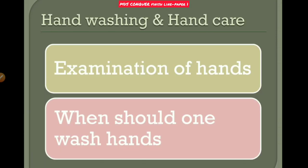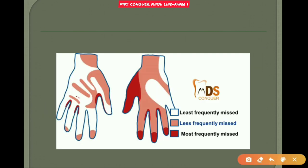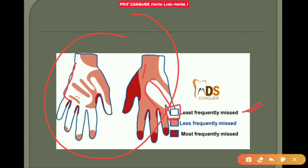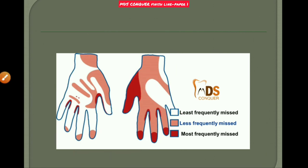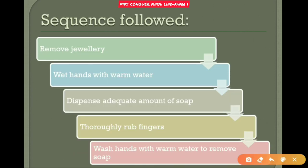For exposure prevention, hand washing and hand care are very important. In the picture shown, colored areas represent the least frequently missed areas during hand washing, while red areas are the most frequently missed. To wash properly, follow this sequence: remove jewelry, wet hands with warm water, apply adequate soap, thoroughly rub fingers, and wash with warm water to remove soap.